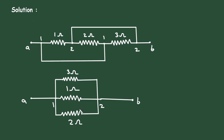Now we can clearly see that the 3 ohm, 1 ohm, and 2 ohm resistors are all connected in parallel. That means this is a parallel circuit.